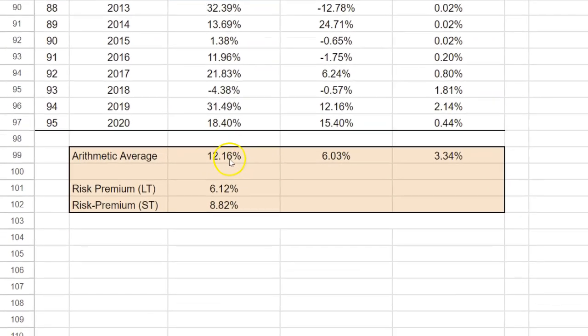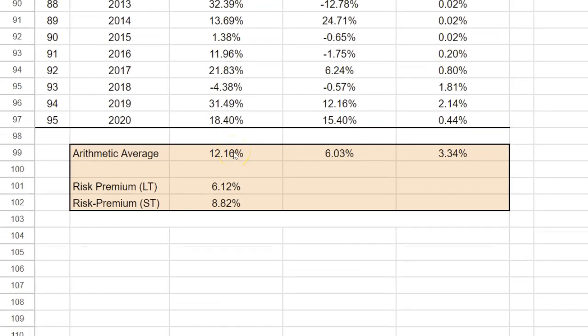And so if I scroll below, I can actually show you what the arithmetic average looks like of all these three numbers. So for example, the market historically has earned an average return of about 12%. If you look during the same time, how much rate of return did long-term government bonds offer? You can take an average over here and see that this has roughly been about 6%, whereas short-term bonds have on average yielded about 3%.